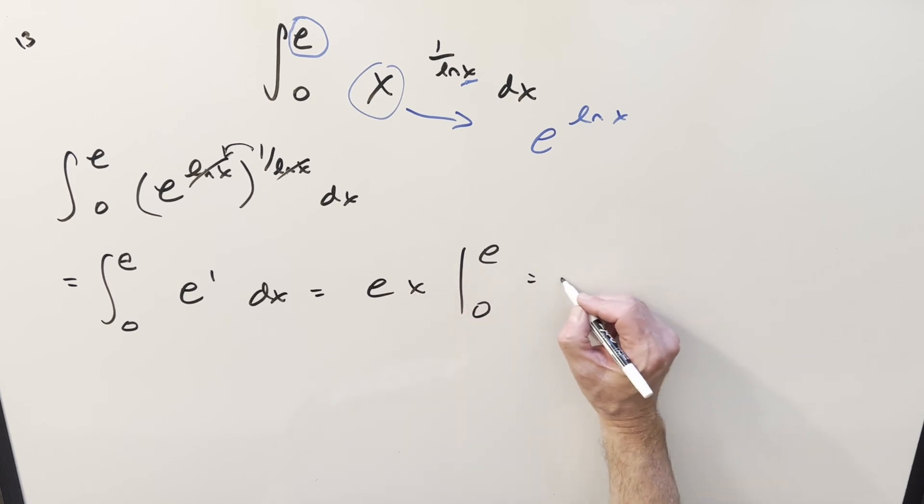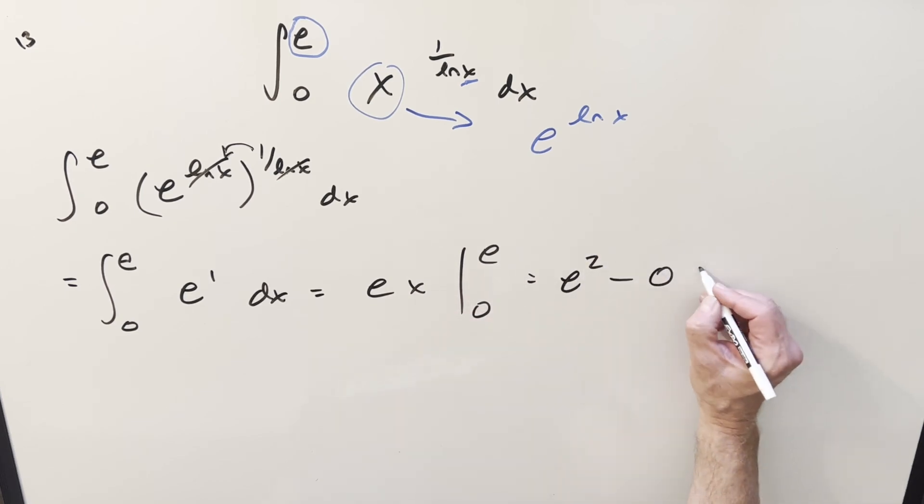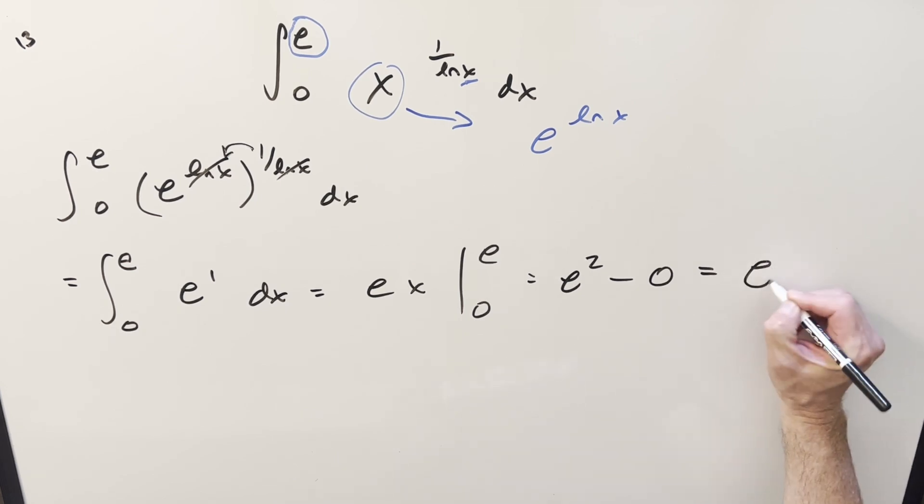Plug in E. Evaluating this, we're going to have this becomes E squared. Plug in 0, we just get 0. And so for my final solution of this, we just get E squared.